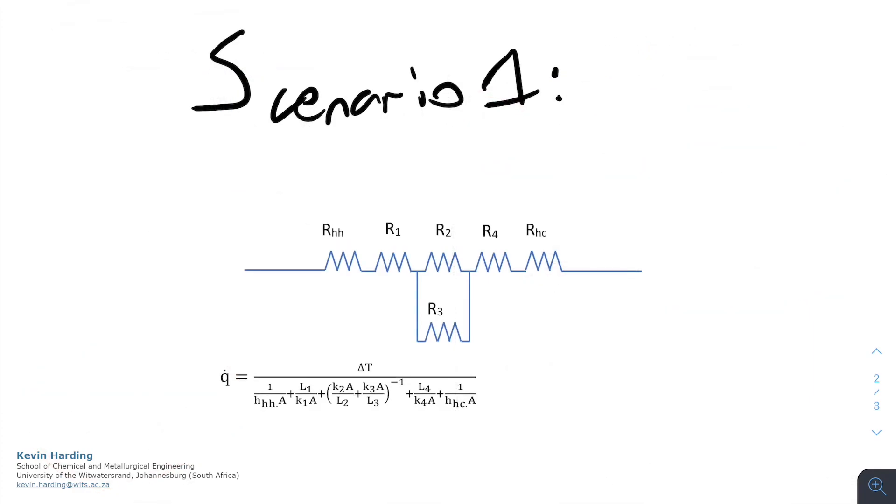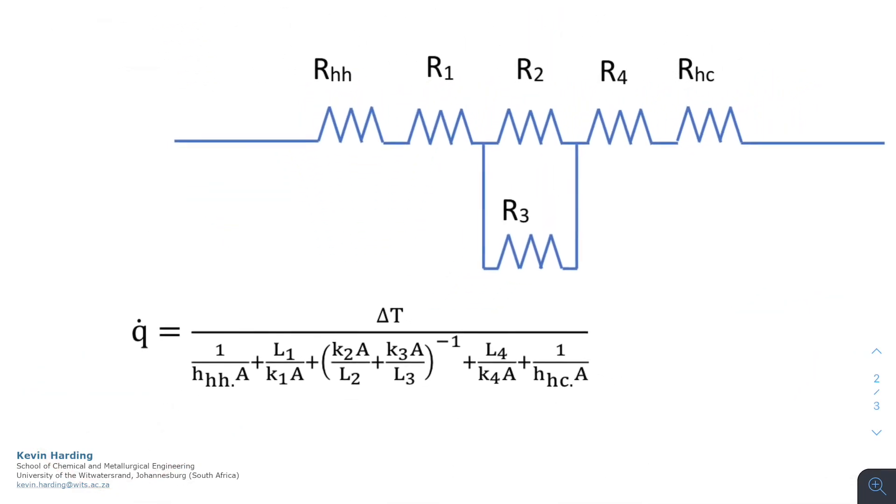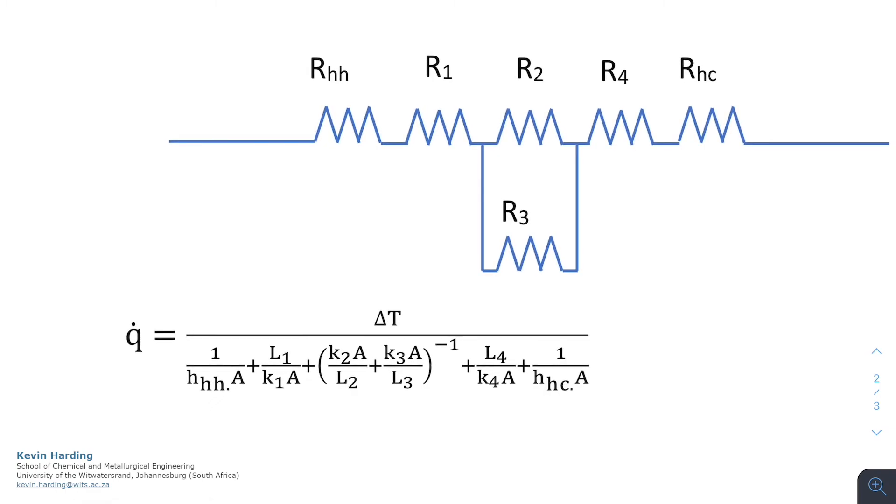Okay, so as I said, we'll neaten this up quickly. Here we have scenario one, and you can see for that we have the value of Q, and then at the bottom we have the resistance term.